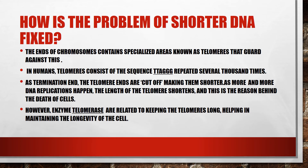How can the problem of shorter DNA be fixed? The ends of chromosomes contain specialized areas called telomeres. These telomeres guard against the shorter DNA strands. In humans, telomeres consist of the sequence TTAGGG, which is repeated several thousand times.